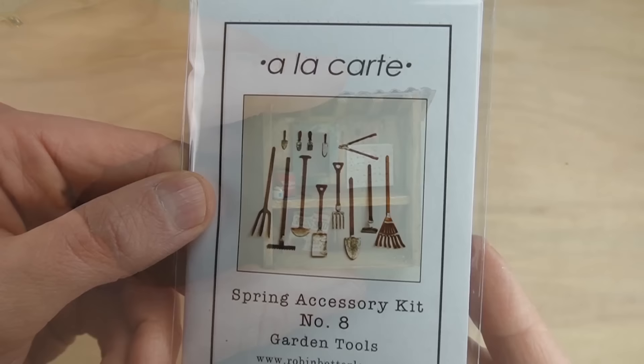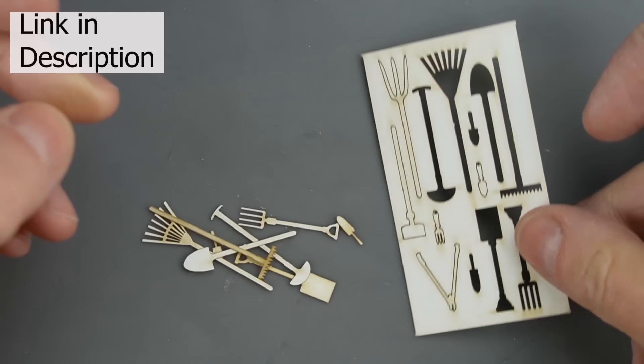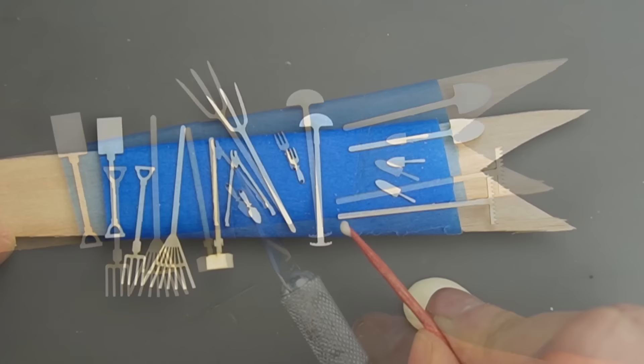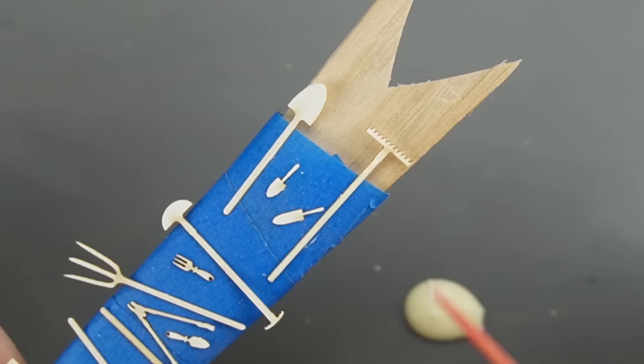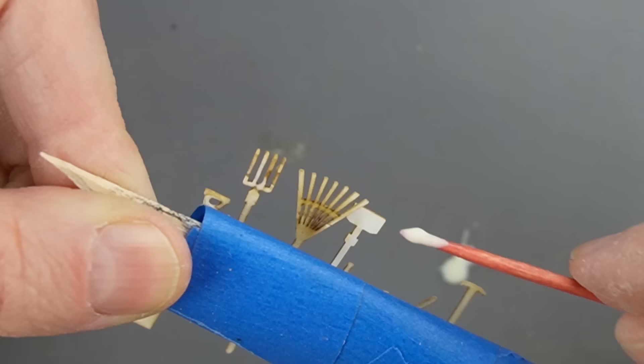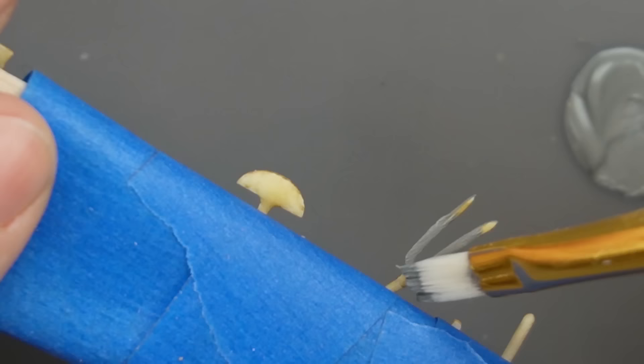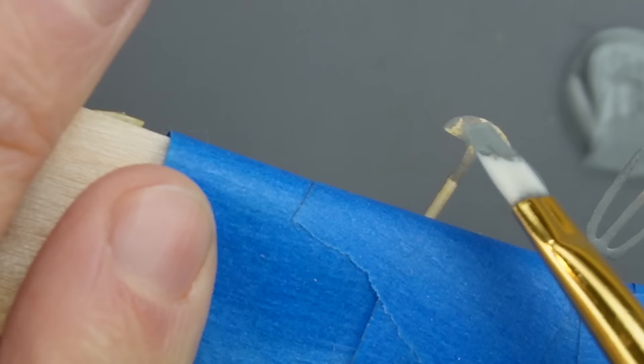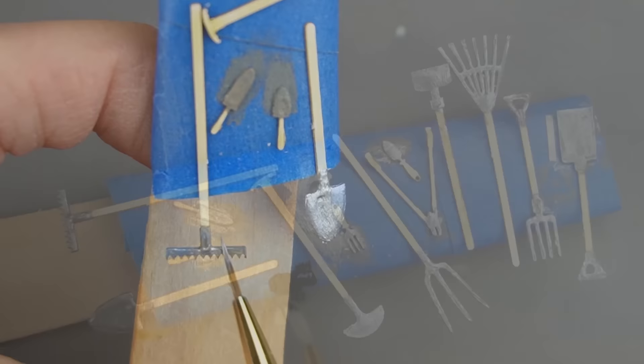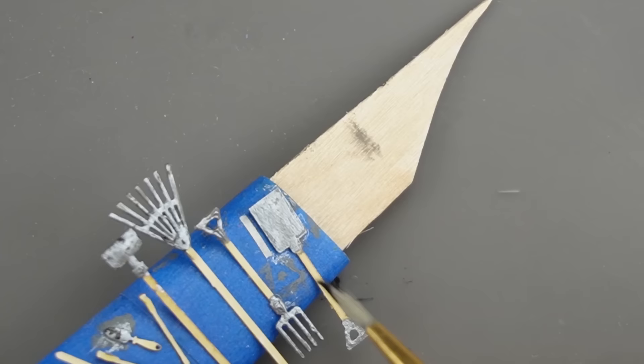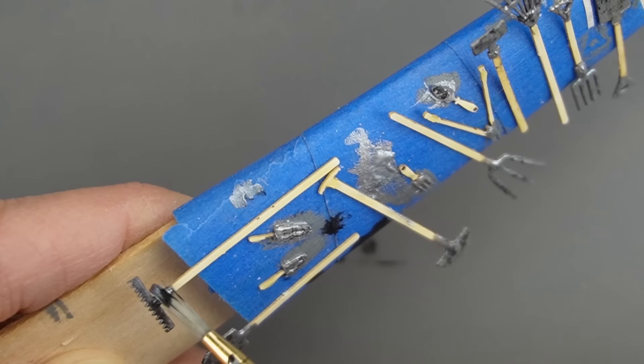This entire project was inspired by this quarter scale laser cut kit from Robin Betterly. These are made from really thin wood, so the first thing I'm doing is adding dimension and strength using wood glue. I'm painting all the metal bits with a base of gray paint covered with metallic silver. This acrylic silver paint is really cheap, which is why I need to use a base coat. The silver paint looks too brand new, so I'm adding a little bit of black paint for tarnish. I'm going over top of the black paint with some more silver so it looks more natural. I used either markers or paint to color all the handles.